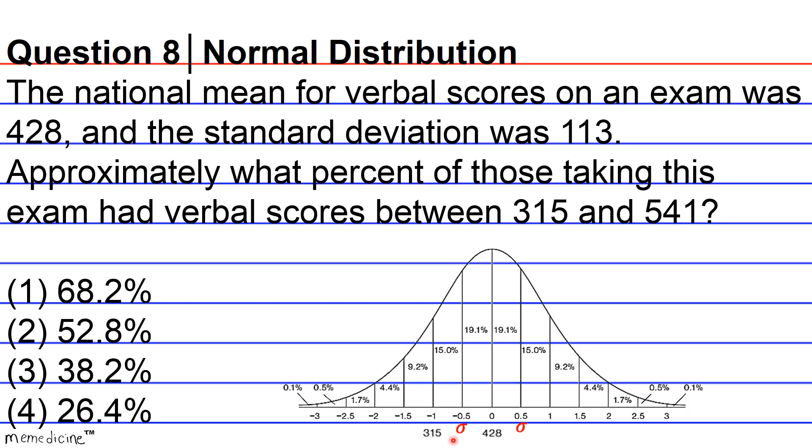Now let's also say that we're going to find out the full range of one standard deviation away from the mean, because that's what we're being asked in the question stem. We also have to add 113, one standard deviation to the mean. So 113 plus 428 is going to yield 541.